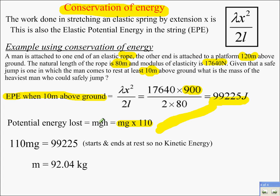It's just all potential energy has gone into elastic potential energy. So we rearrange that and we get a mass of 92 kilograms.